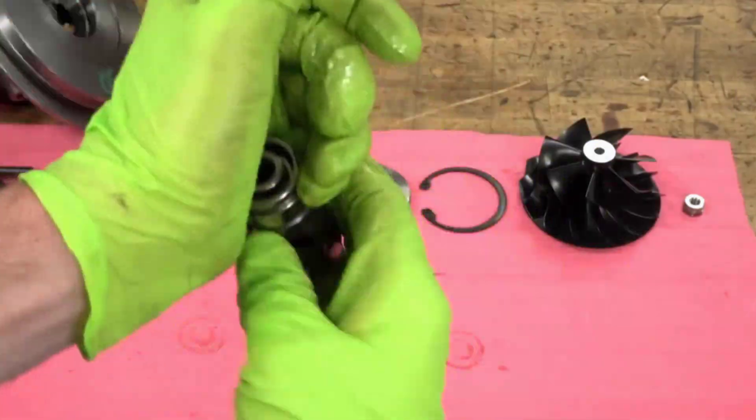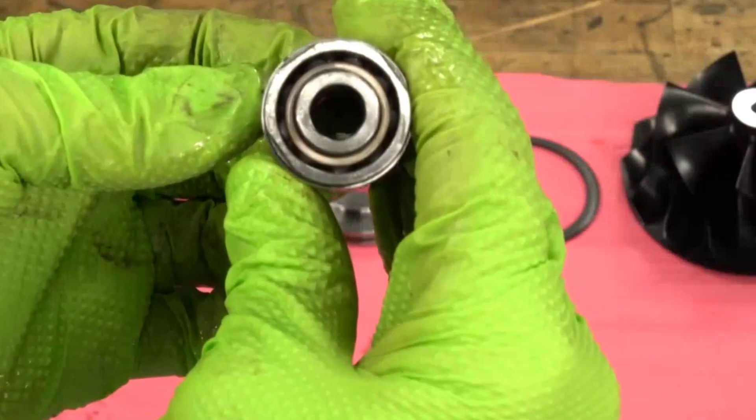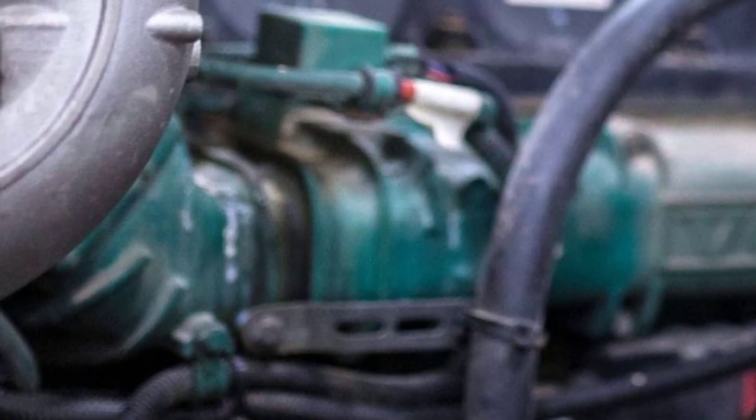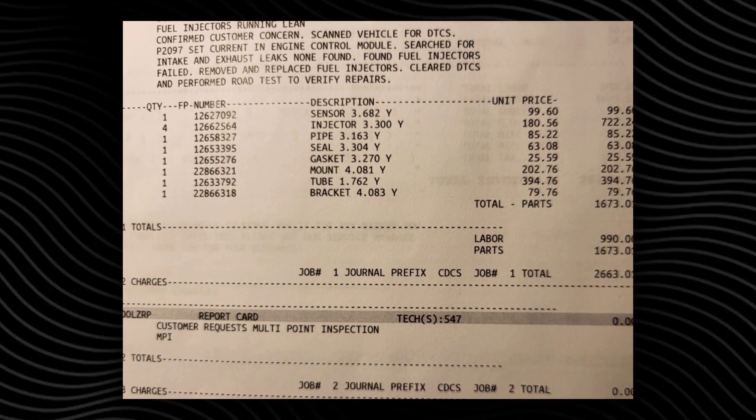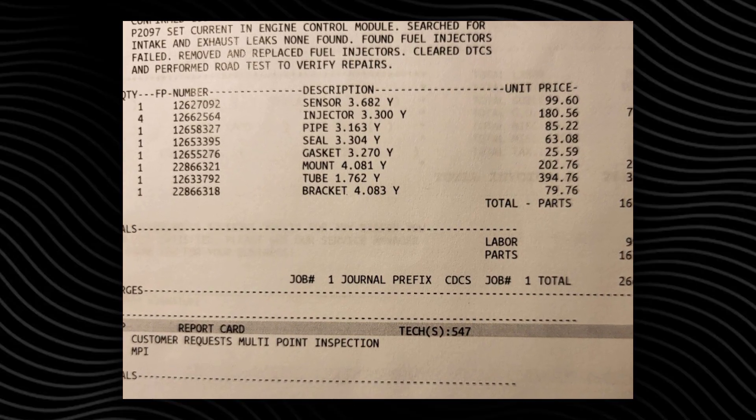Over time, these deposits can cause sticky rings, higher oil consumption, and even turbo failures in severe cases. For engines with direct injection or turbo charging, high volatility is a recipe for carbon buildup and reduced performance. This is why volatility is not just a lab number, it is a direct link to oil consumption and costly repairs, especially in newer high heat engines.